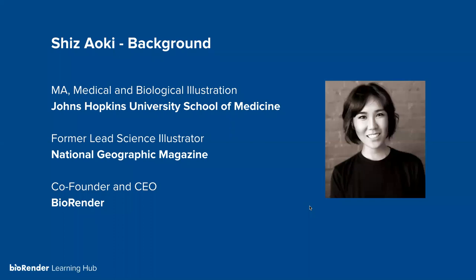A bit of background about myself: I went through the graduate program at Johns Hopkins University School of Medicine — about five or six students a year matriculate from that program. Following school, I went straight to National Geographic as my first job and led the science illustration arm there for several years. Most recently, I co-founded BioRender with a few colleagues, and now we are a much bigger team. I'm really excited to keep building products to help with your visual science communication endeavors.